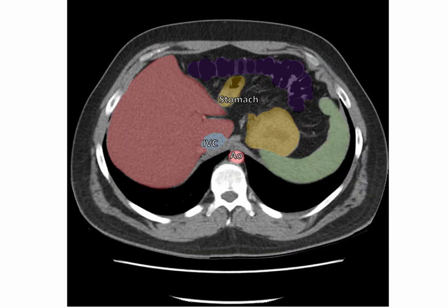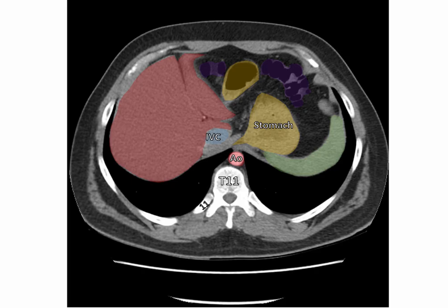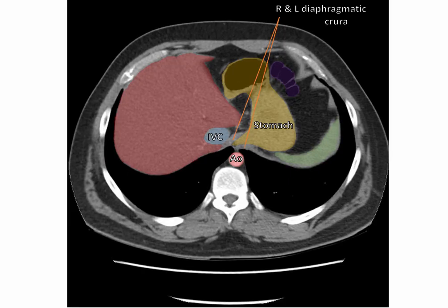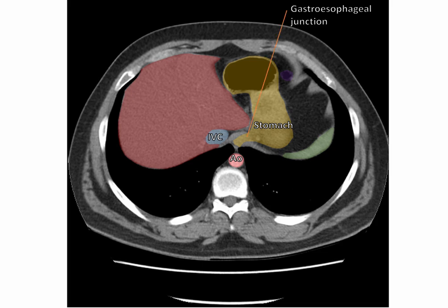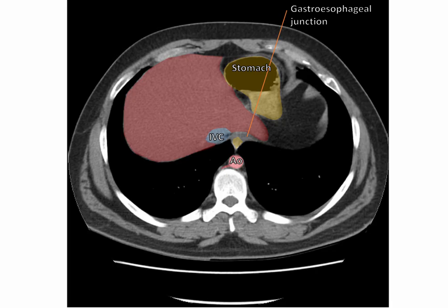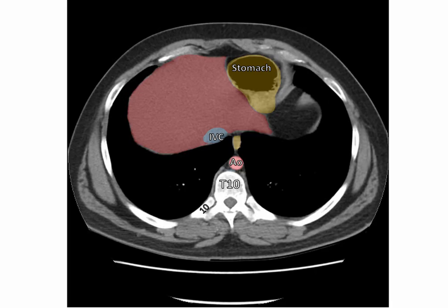As we move to vertebral level T11, we can start to see the right and left crura of the diaphragm, and how the esophagus is beginning to penetrate the right crus. This is marking our gastroesophageal junction. The profiles of the abdominal organs are beginning to diminish as we begin to move through the diaphragm. At the T10 level, we can see the profiles of two veins here, either side of the thoracic aorta. These are the azygous and hemiazygous veins. Also visible are the posterior intercostal veins, which are draining into these vessels.